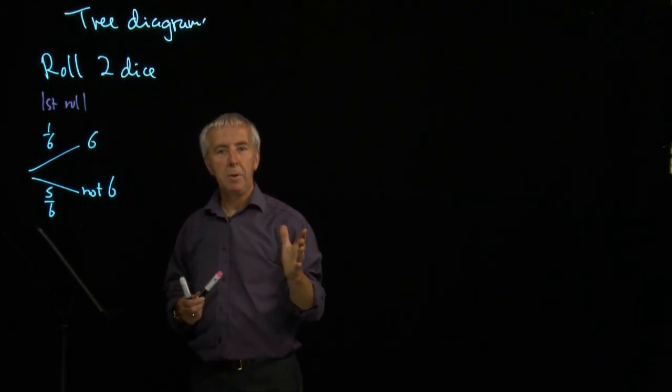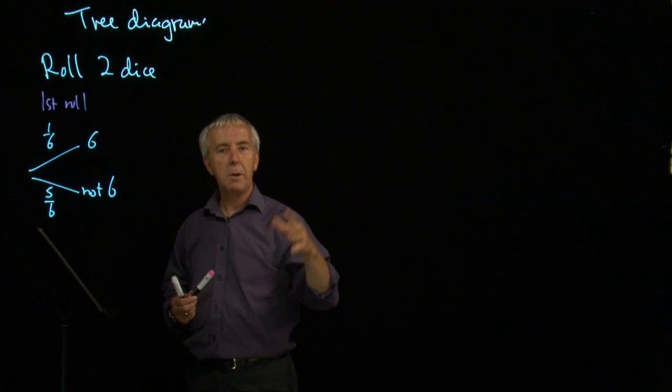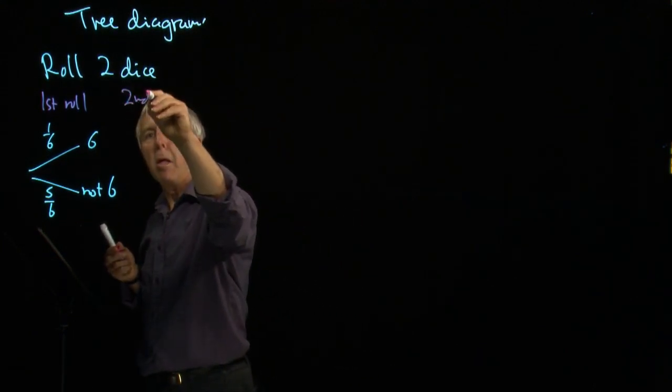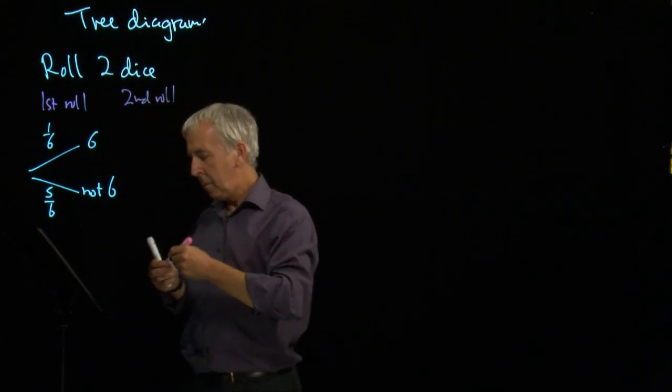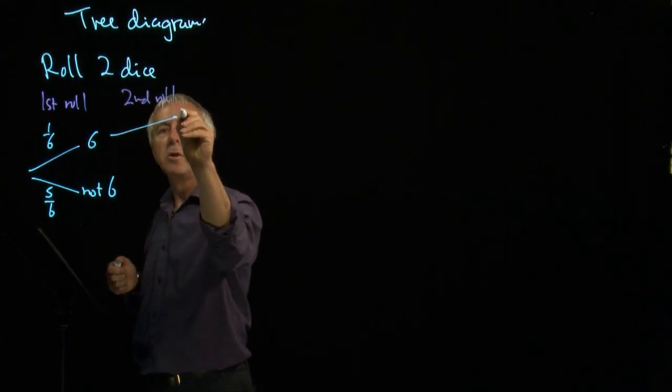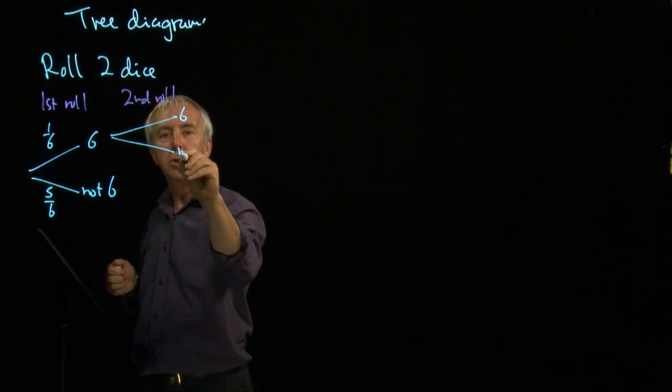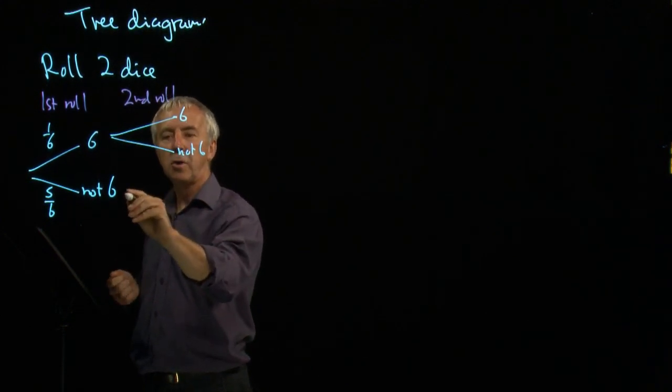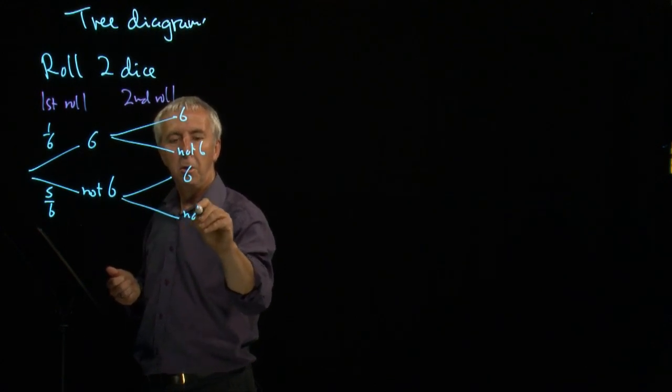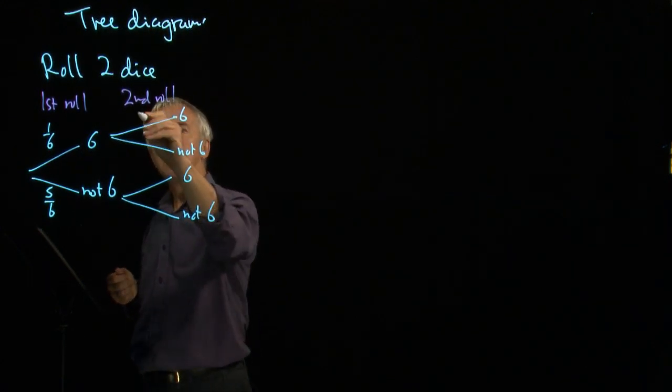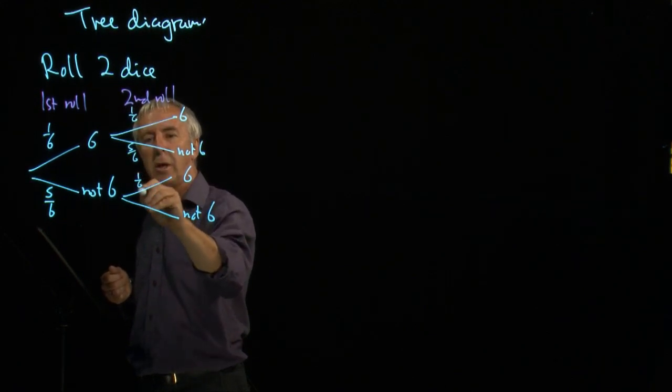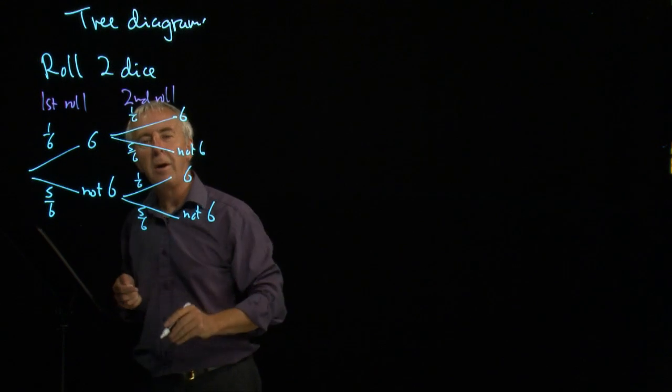Then whatever we get on the first experiment, we can roll the dice again. If we got a six first time, we might get a six next time or not a six. Equally, if we didn't get a six first time, we might still get a six a second time or not a six. The probabilities haven't changed: one-sixth and five-sixths, one-sixth and five-sixths.